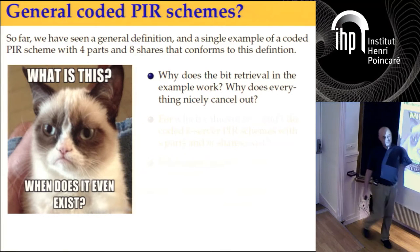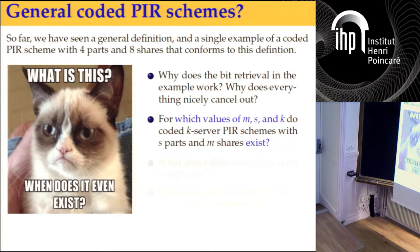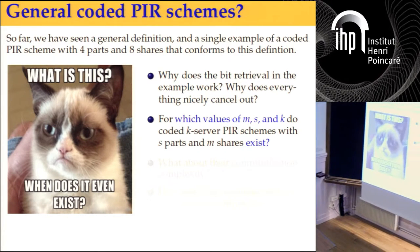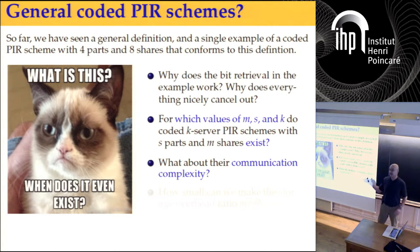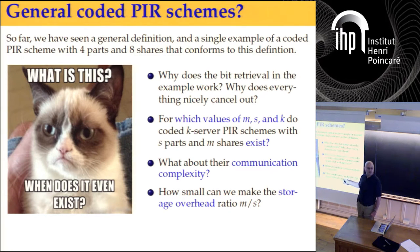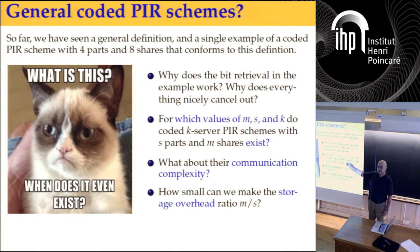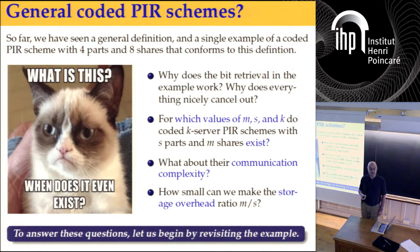We have three parameters: M servers, S parts, and K — the K-server parameter of the original protocol — which determines communication complexity. We want to know for which values of M, S, and K such things exist. What about communication complexity? And the main question: how low can we make the storage overhead M over S?